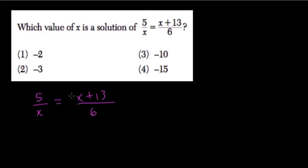I'm going to multiply everything by 6, and I get 30 over x equals x plus 13. These 6s cancel out over here.